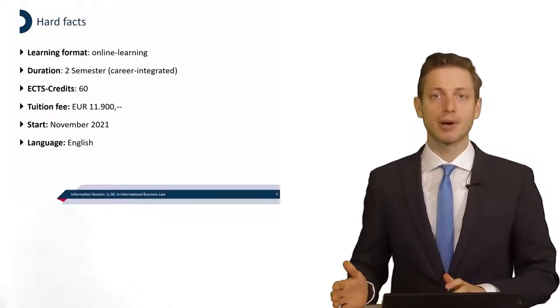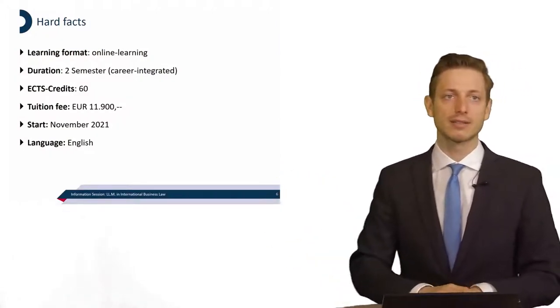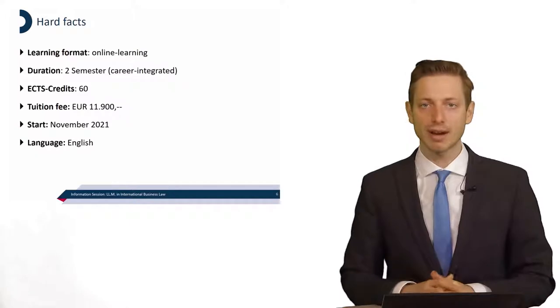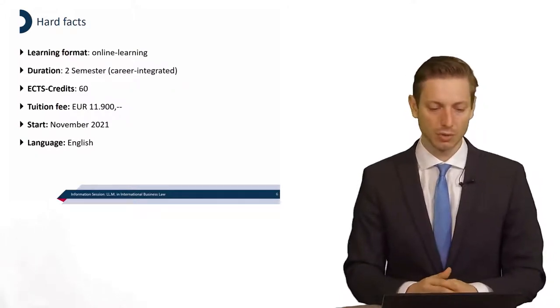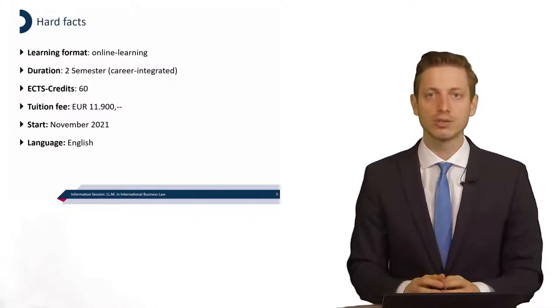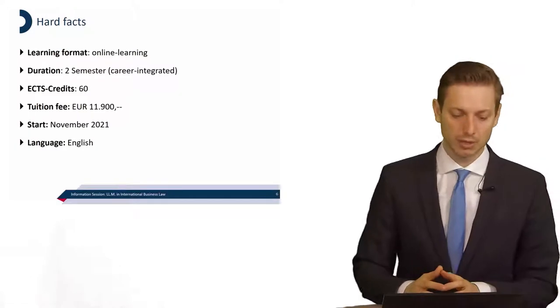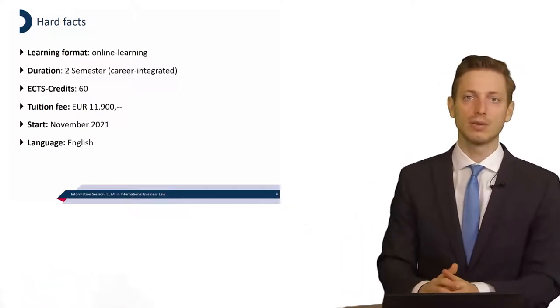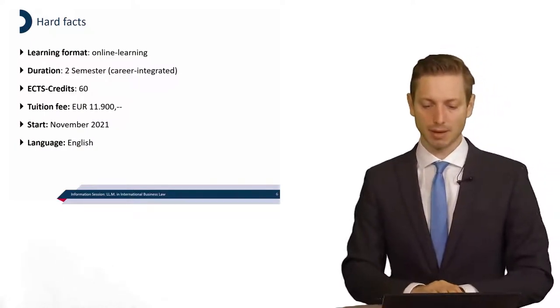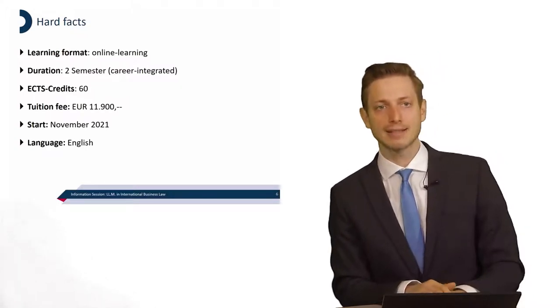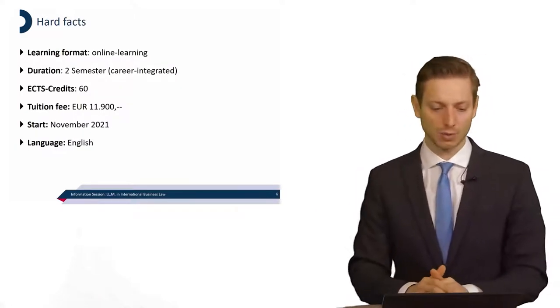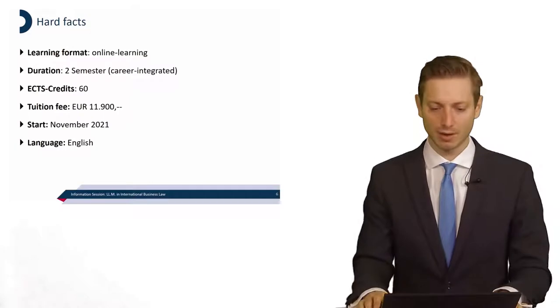Some hard facts about the program. We're conducting this online, so it's only online learning. The duration is two semesters. It is career integrated, so you can do that while working as a working professional. It awards you 60 ECTS credits. The tuition fee you can pay in installments and is in principle, depending of course on the applicable tax rules in your country, tax deductible. And the first start will be in November 2021. And of course, the language of the program is English.